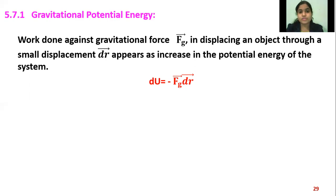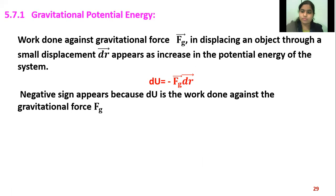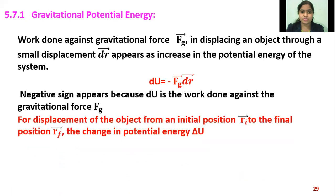The increase in potential energy is given by du equals minus vector Fg dot vector dr. There is a negative sign because du is the work done against the gravitational force. Gravitational force acts in the downward direction on the object, and the object is displaced in the upward direction.